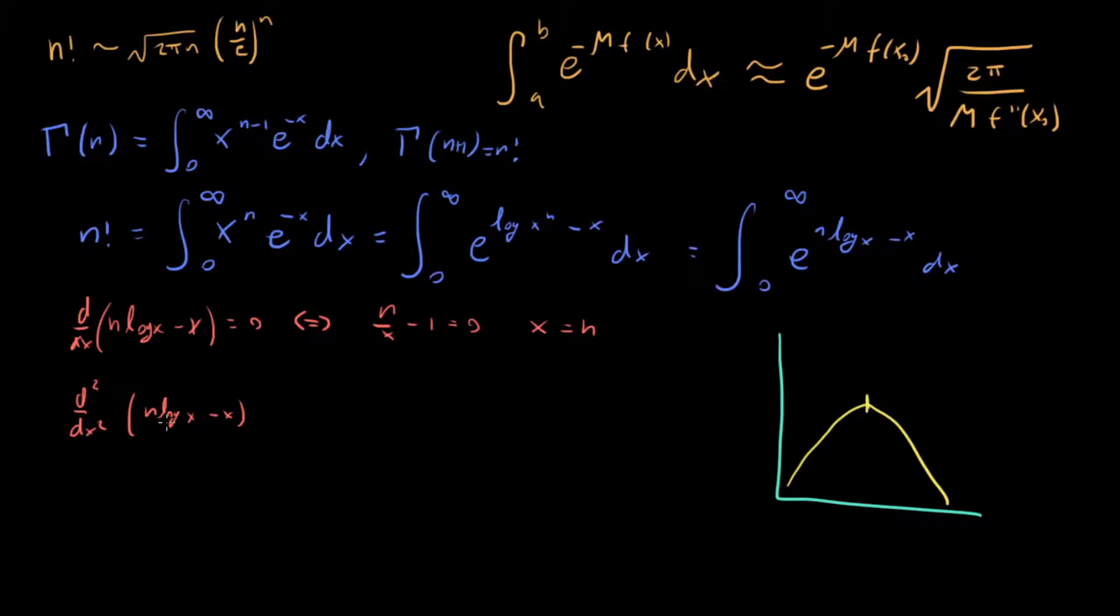This x is going to drop out and then we're going to have n log x differentiate. That one time you have n over x, second time you have minus n over x squared. And then the minus sign makes sense because this is concave down.